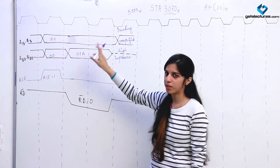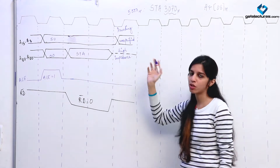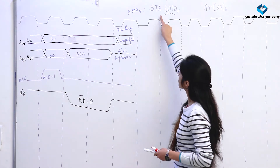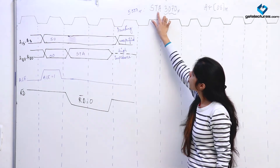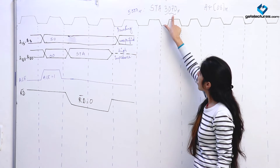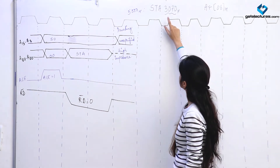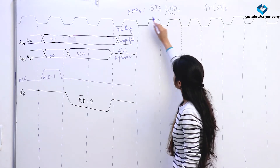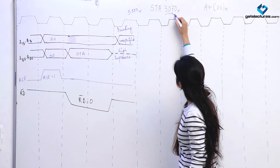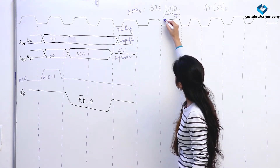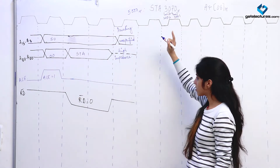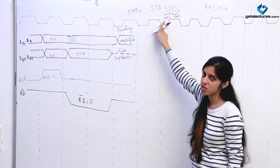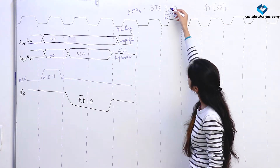Decoding takes place in this cycle. After decoding, the microprocessor knows that the contents of the accumulator have to be stored. We need the address of the location where the contents have to be stored. This is a 3-byte instruction — the opcode takes 1 byte, and the two address bytes take 1 byte each. Whenever we store an address like 3070, location 5001 will contain the lower byte 70 and location 5002 will contain the upper byte 30. So firstly we are going to get 70, then 30.